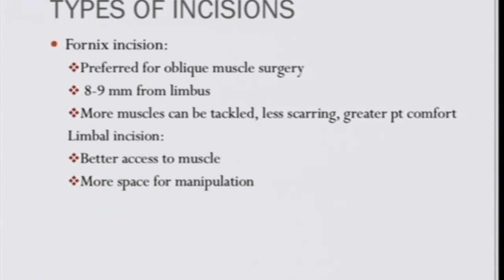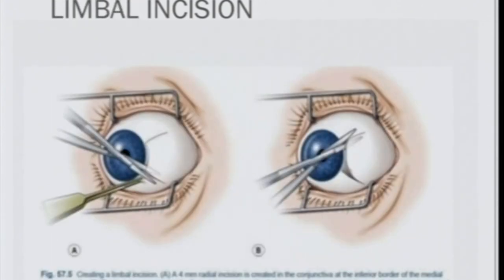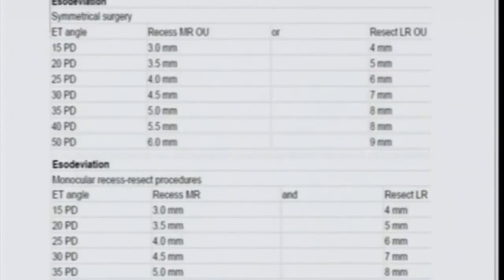Types of incisions include the Parks-Marsh fornix incision and the limbal incision. The fornix incision is particularly convenient for oblique muscle surgery and re-surgery — it is cosmetically better as no scar is visible. The limbal incision, approximately 8mm from the limbus, has its own advantages and disadvantages.